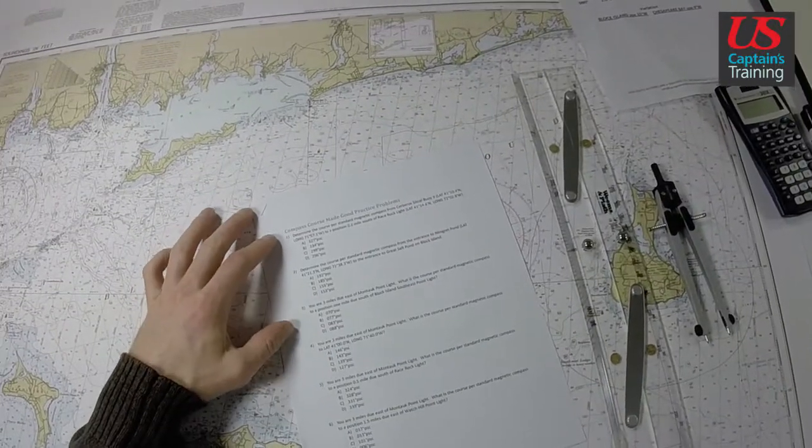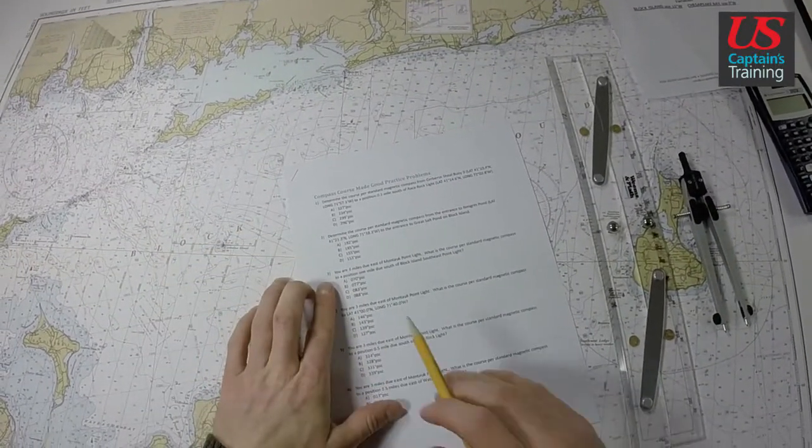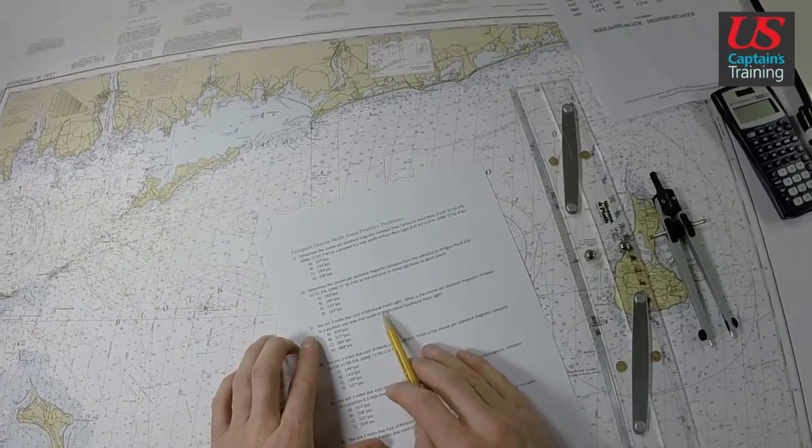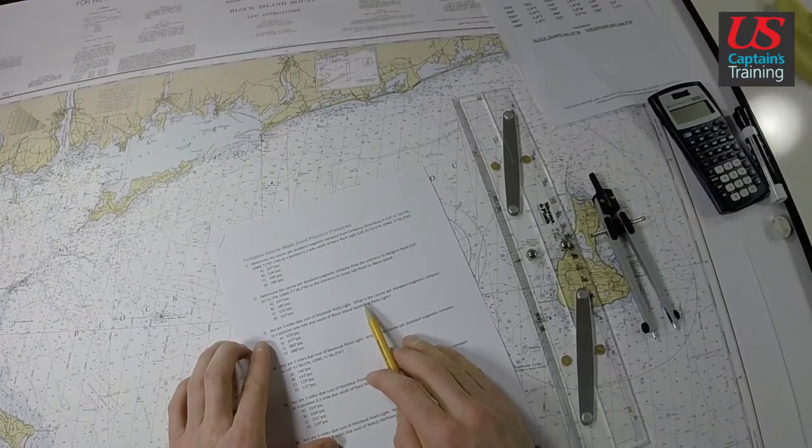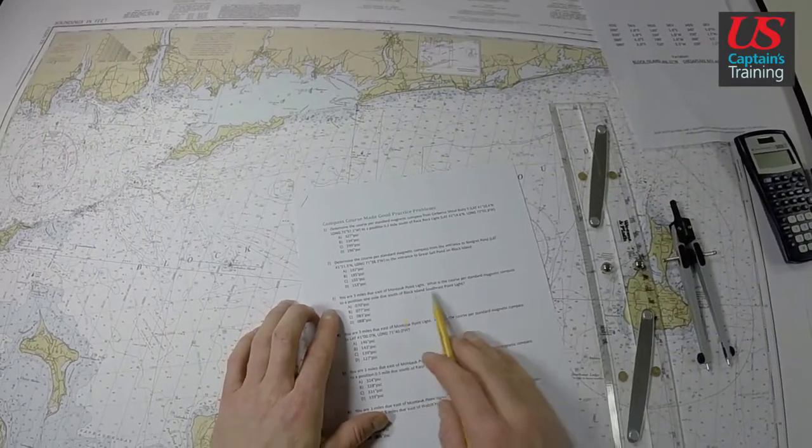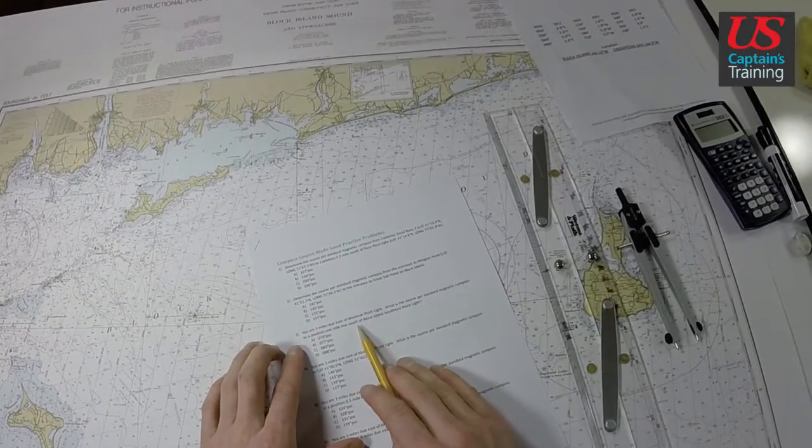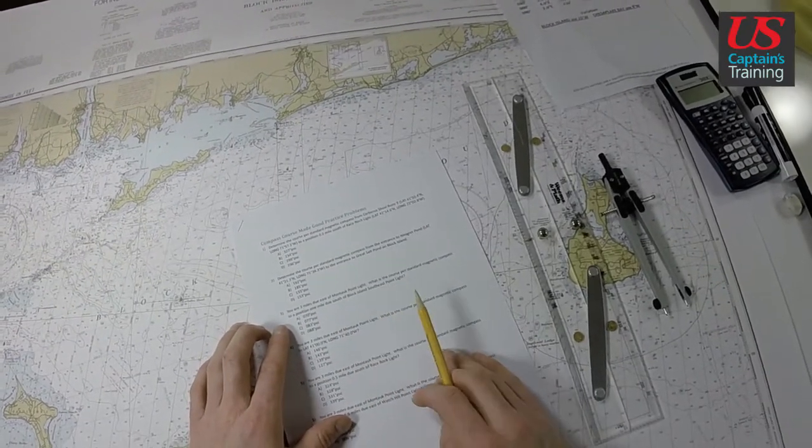Compass Course Made Good Practice Problem 3. You're 3 miles due east of Montauk Point Light. What is the course per standard magnetic compass to a position 1 mile due south of Block Island Southeast Point Light?